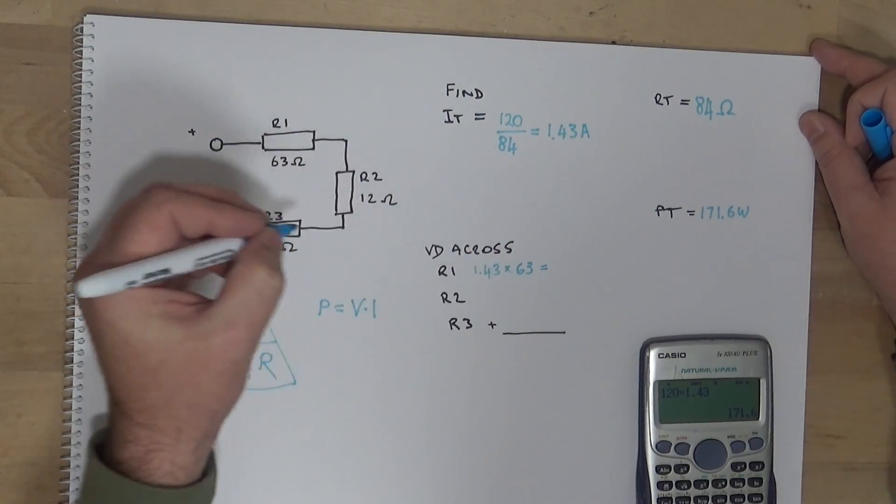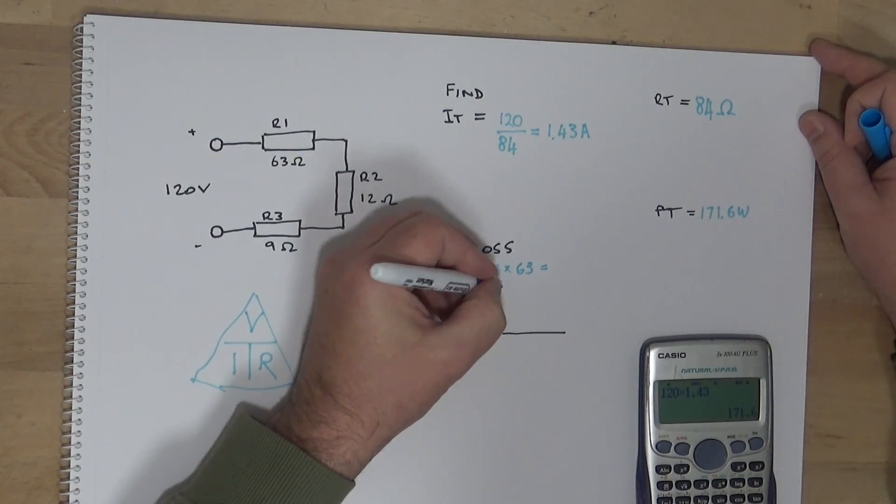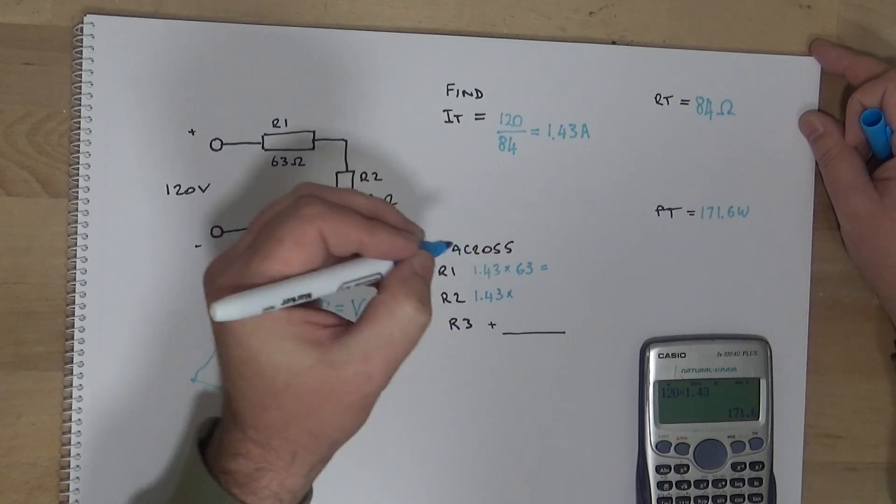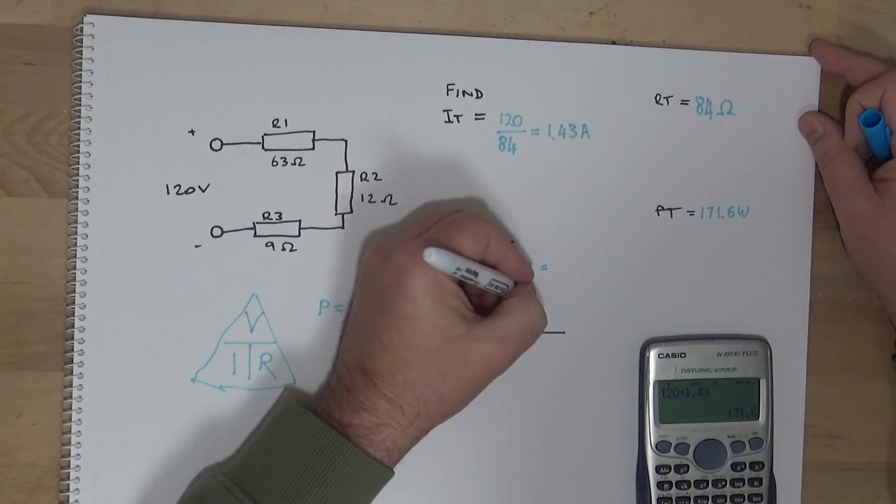R2 is going to be 1.43 multiplied by 12.